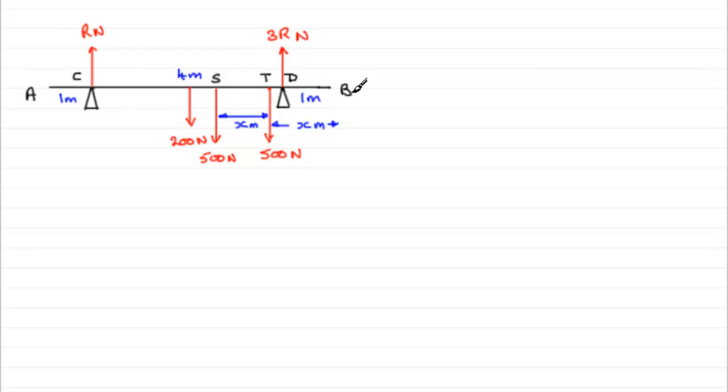Now we've got to find out what x is, the distance that Tom is from B. And to do this, I'd want to do it in two parts. We've got to find out what r is first of all, so that we can use it in the moments equation.